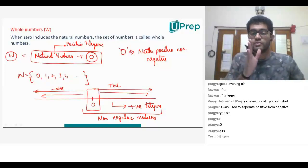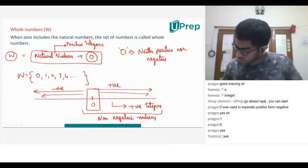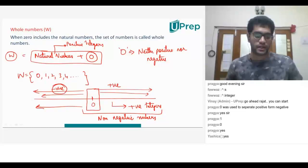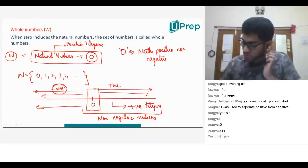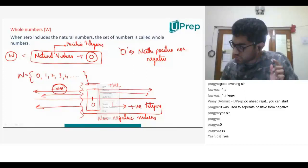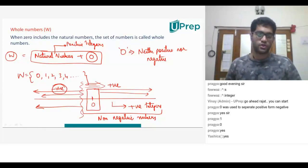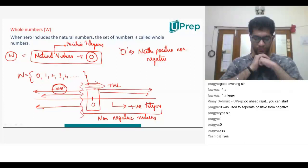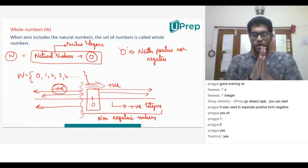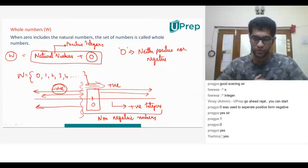Why are they called non-negative numbers? Because we haven't moved to the left side of zero. When I move to the left of zero all numbers become negative, but from zero rightward all numbers are positive. If I take zero and all numbers to the right, I get non-negative numbers. Is this concept clear? I don't understand — couldn't we just call them positive integers? Correct — to the right of zero, 1, 2, 3, 4 are positive integers. But zero is neither negative nor positive.